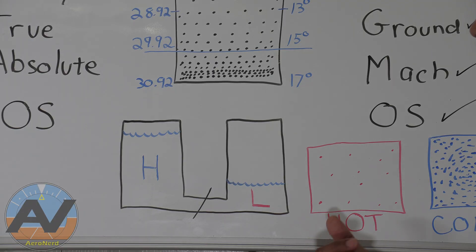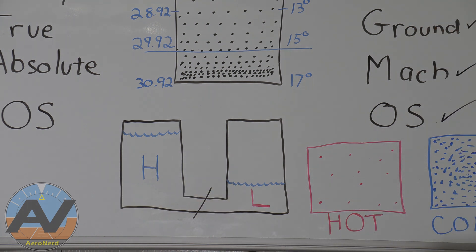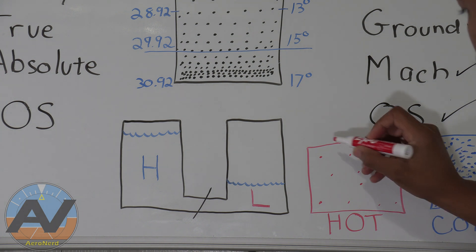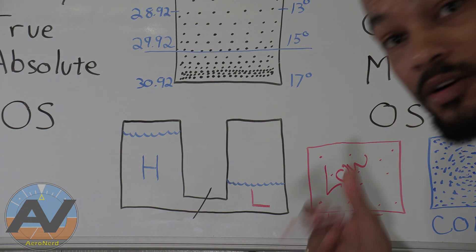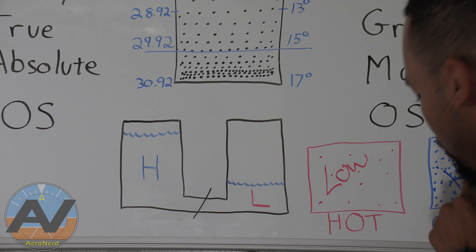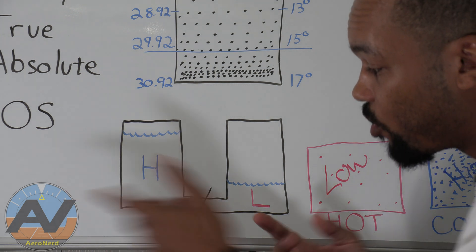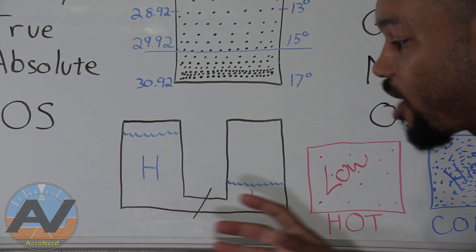To better understand this — we went over hot and cold, now let's go over pressure. Hot represents low pressure, and cold represents high pressure. High pressure always wants to go toward low pressure. I use this analogy to help explain that: imagine a column filled with water — a lot of water on one side, less on the other, separated by a door. Remove that door, and the high-pressure side naturally flows toward the low-pressure side to equalize.